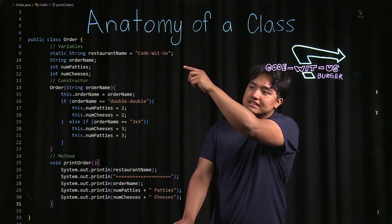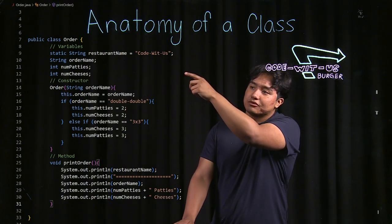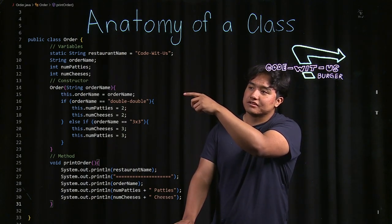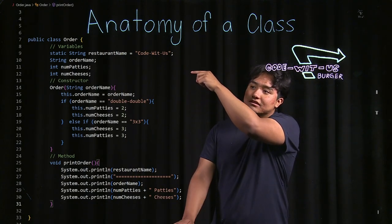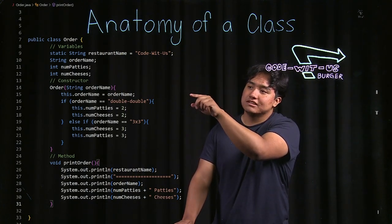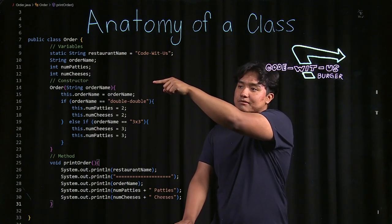What you would do to actually use this order name when there's an order name parameter in another method or the constructor is you would use the this keyword to use this one, and then no this keyword to use the one that's defined in the parameters.